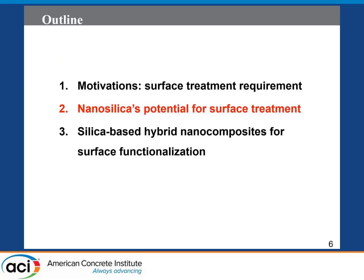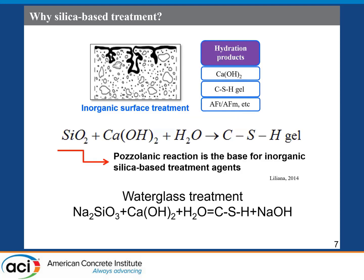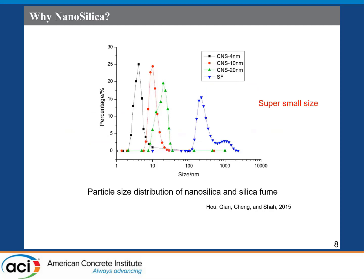Taking into account these two issues, let's see the potential of nanosilica for surface treatment. It's quite usual to use silica-based materials for surface treatment — for example, water glass. When applied to the surface of hardened concrete, it reacts with the hydration products of the cement, like calcium hydroxide, forming a pozzolanic reaction and filling the pores. It's a kind of inorganic surface treatment method, which has longevity equal to that of the concrete structures.